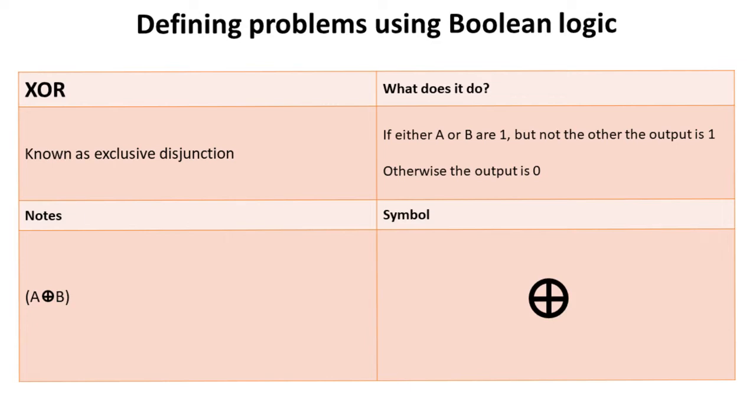With OR, as long as one of these is a 1, the output is 1, and that could mean both. If that is a 1, the output is 1. If that's a 1, the output is 1. If both of them are 1, the output is 1. But with exclusive OR, it has to be just one or the other. It can't be both.